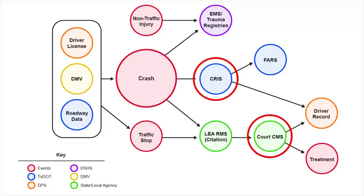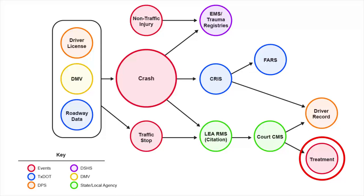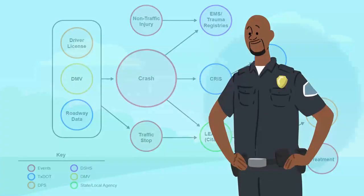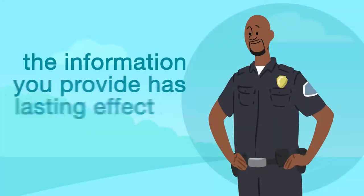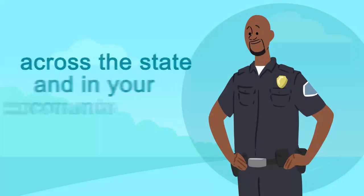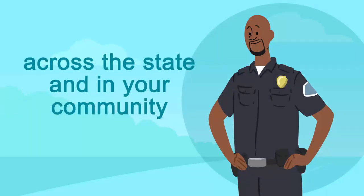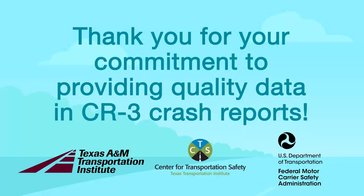CRIS and court CMS data flow into driver records. In some cases, a court may require an individual to seek drug or alcohol treatment. Documentation of court-ordered treatment fulfillment resides in the court CMS. As you can see, the information you provide has lasting effect because it is used to support safety, funding, and infrastructure decisions across the state and in your community. Thank you for your commitment to providing quality data.